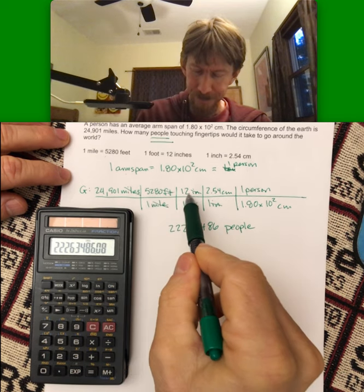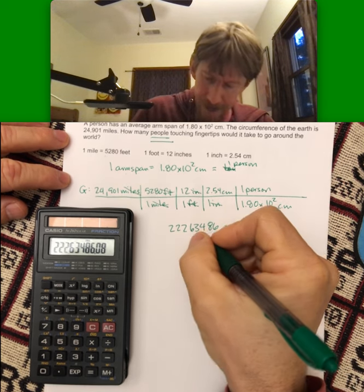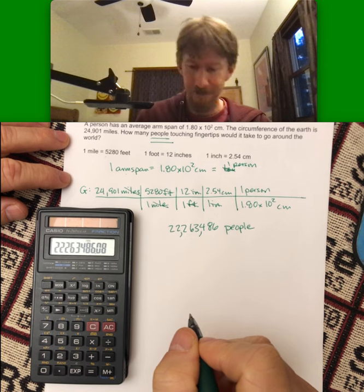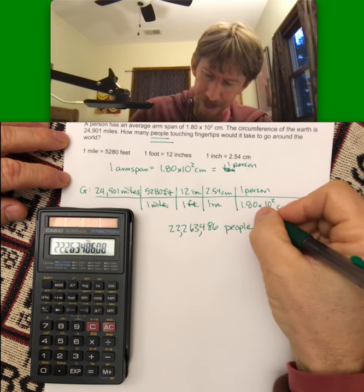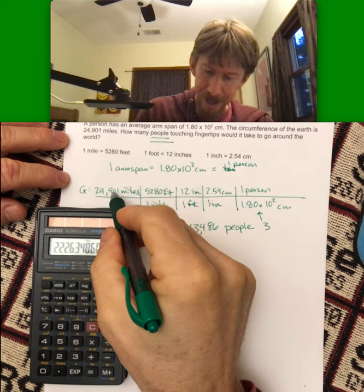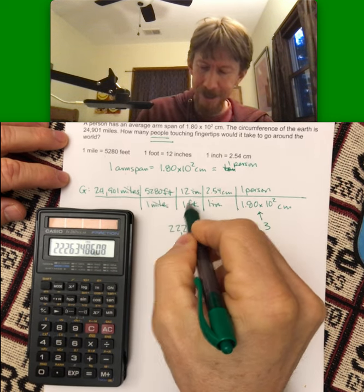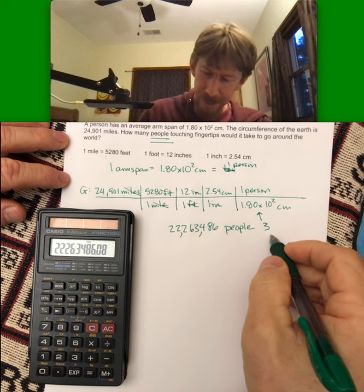That's going to be 22 million people plus. This has three sig figs, five exact, exact, exact. My smallest number of sig figs is three.